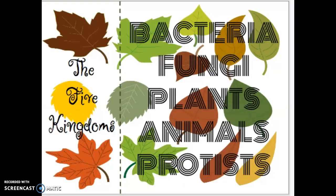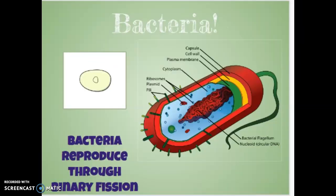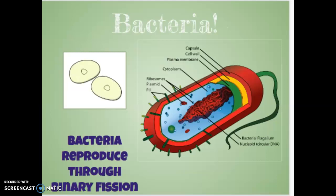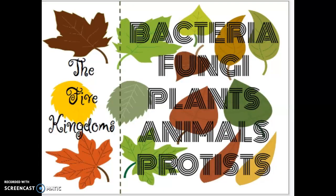The five kingdoms: bacteria, fungi, plants, animals, and protists. Bacteria reproduce through binary fission. Every living thing fits into one of these five categories. Think of any living thing and see if you can figure out which kingdom it fits into. Humans are in the animal kingdom.